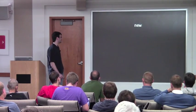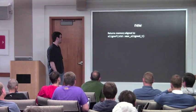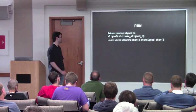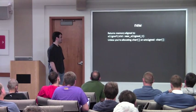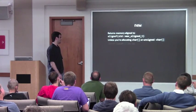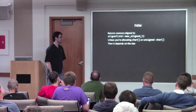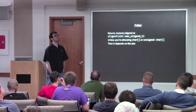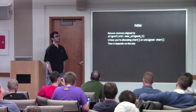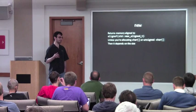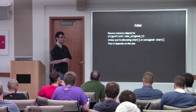`new` has some interesting things when it applies to alignment. `new` always returns memory aligned to `alignof(std::max_align_t)`, except when you're allocating a `char` array or `unsigned char` array — specifically just these two types. In that case, it depends on the size: the alignment is the maximum alignment of the maximally aligned type of that size.